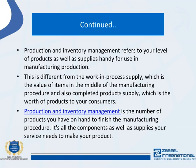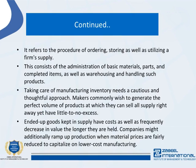Production and inventory management is the number of products you have on hand to finish the manufacturing procedure — all the components and supplies your business needs to make your product. It refers to the procedure of ordering, storing, and utilizing a firm's supply, including the administration of basic materials, parts, and completed items, as well as warehousing. Companies may also ramp up production when material prices are fairly reduced to capitalize on lower cost manufacturing.